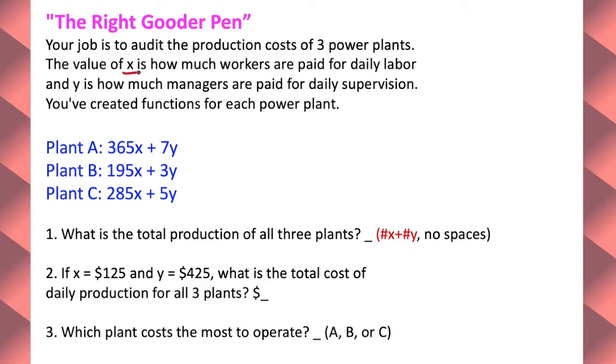We're doing the Right Gooder Pen. Looks like x is going to be how much the workers are paid for daily labor and y is how much managers are paid for daily supervision. You've created functions for each power plant. So there's power plant A, B, and C.